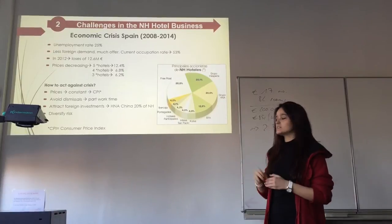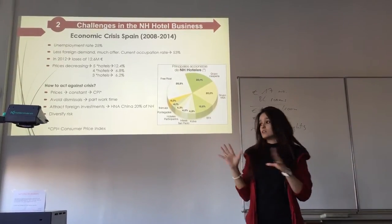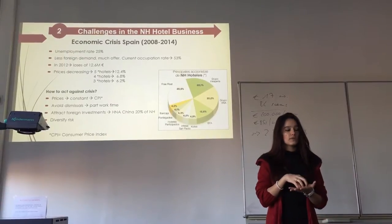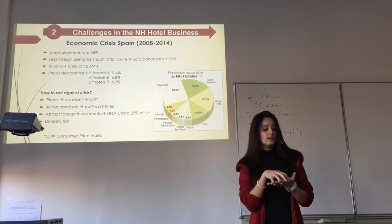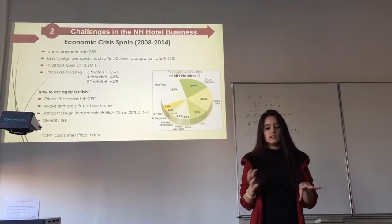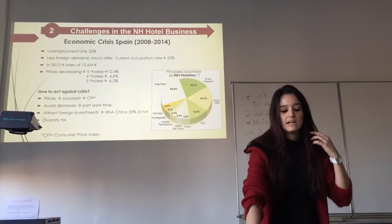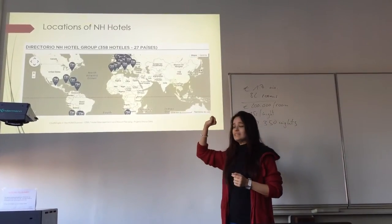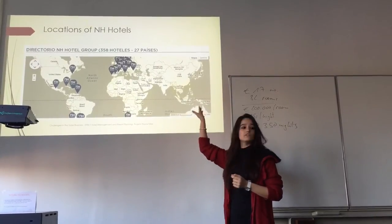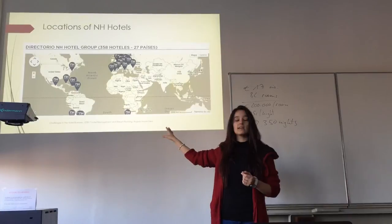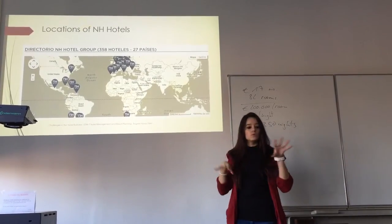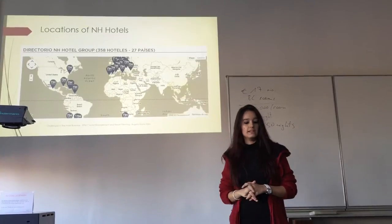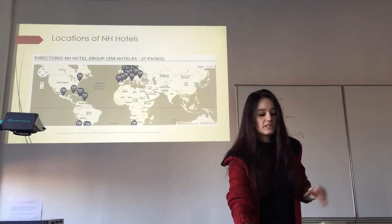We're also trying to diversify risk. The crisis in Spain affected hotels very directly, so instead of having all our hotels in Spain or that area of Europe, we're spreading out. Currently we're located across almost all of Europe, and also in North, Central and South America, and South Africa. We're trying to expand to other continents. This way, if something happens in one region, it doesn't affect all our hotels directly.